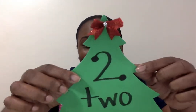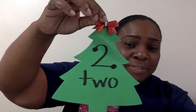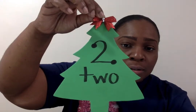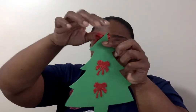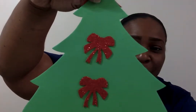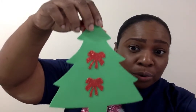What comes after one? You got it — it's the number two! Here are my two dots to represent the number two, and here is the written word 'two.' When we turn it around, how many decorations do you see? Count with me — one, two. There are two Christmas bows!